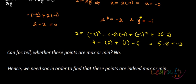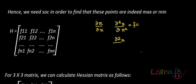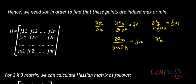Now we find the second-order conditions. To do this, we calculate the Hessian matrix — the matrix of second-order partial derivatives. We calculate: del²z/delx² (f₁₁), del²z/delx·dely (f₁₂), del²z/dely·delx (f₂₁), and del²z/dely² (f₂₂). This gives a 2×2 Hessian matrix for this function.